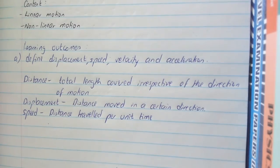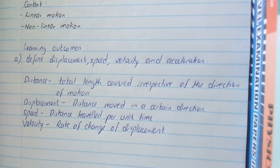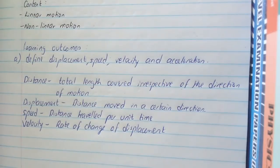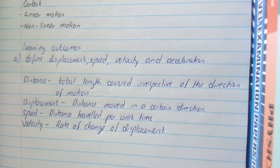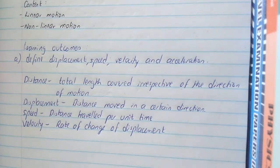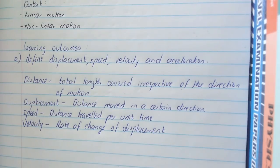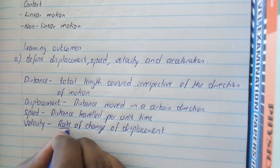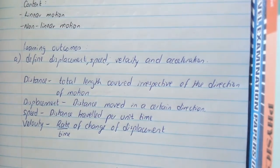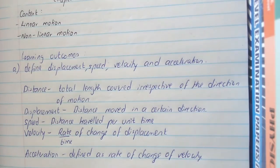Speed is defined as the distance traveled per unit time. Velocity is defined as the rate of change of displacement. It is important to note that 'rate' already includes time, so we can say 'rate of change of displacement' or 'displacement per unit time,' but it is incorrect to say 'rate of change of displacement per unit time.' Acceleration is defined as the rate of change of velocity.